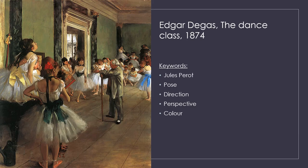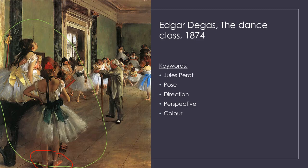The two dancers in the foreground are painted in a not particularly graceful manner. The first is standing and resting quite heavily on her feet in an ungainly pose. The other dancer is sitting on the piano, leaning back to scratch her back. The first dancer also holds a red fan and has a green ribbon on the back of her dress.